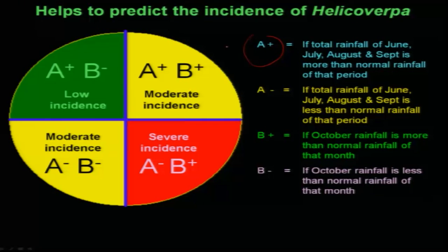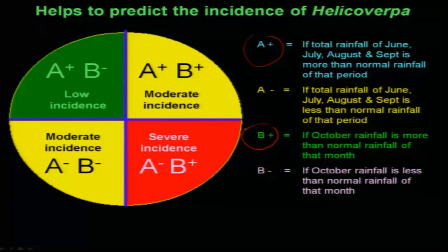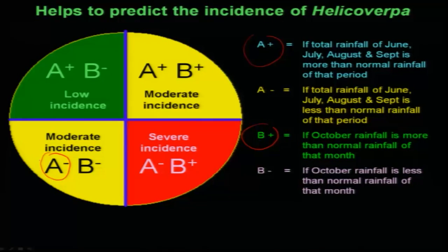This forecasting model has been developed using thirty years of rainfall data, making two situations. 'A' refers to the average rainfall of a particular location for the last thirty years from June to September. 'B' refers to the average rainfall that occurs during October month only. Considering these two factors, the incidence in November — the peak period — is predicted. If both A and B are low, there will be a moderate incidence.